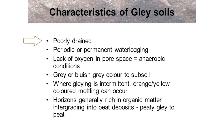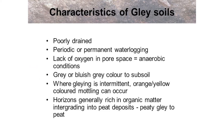Gley soils are characteristically poorly drained and either periodically or permanently waterlogged. Water takes up the pore space in the soil, so there is a lack of oxygen, resulting in anaerobic conditions. Gley soils can possess a grey or bluish-grey colour right down to the subsoil. Where gleying is intermittent, orange-yellow mottling can occur. Horizons are generally rich in organic matter and can integrate into peat deposits, from a gley to a peaty gley to a peat.